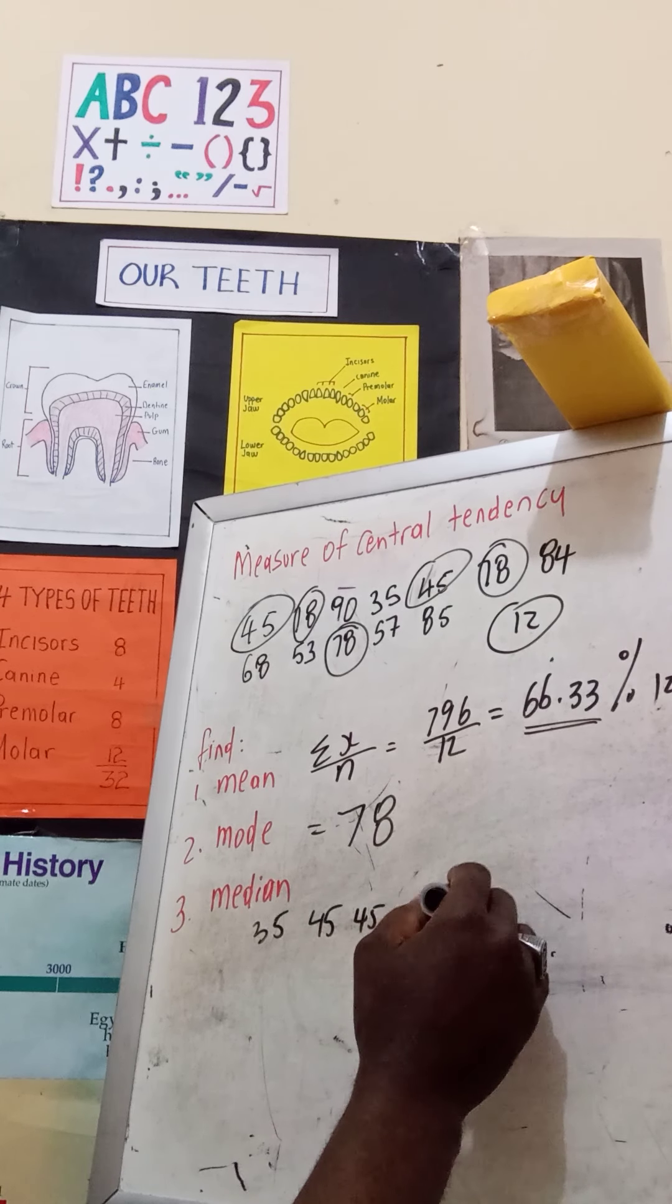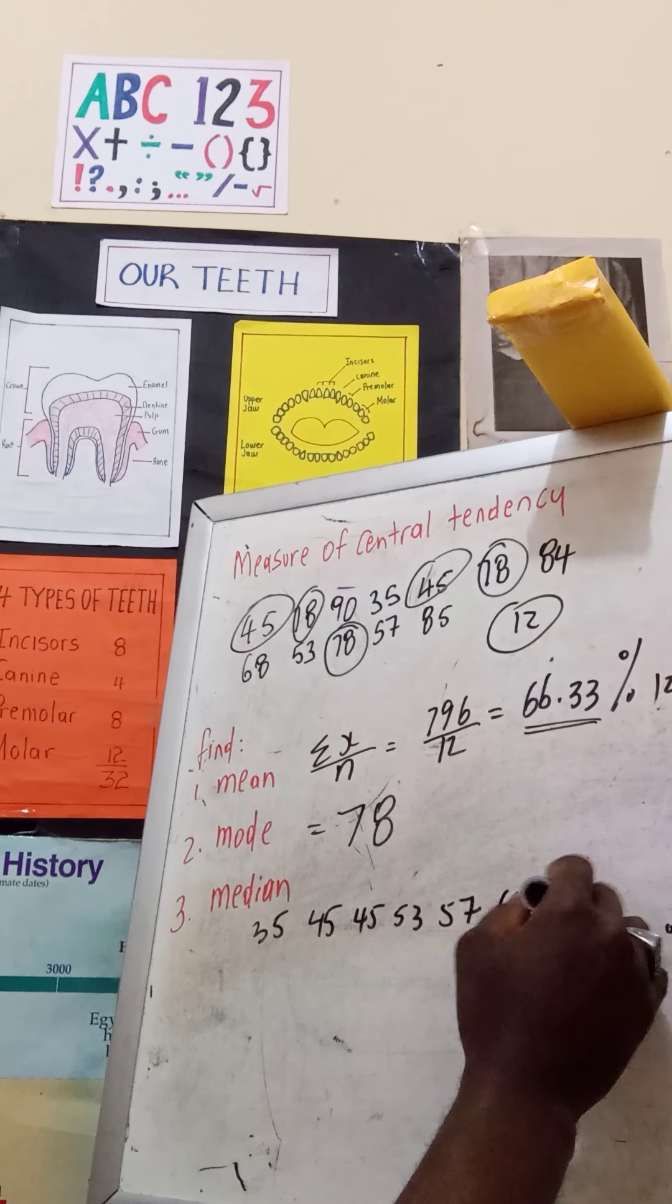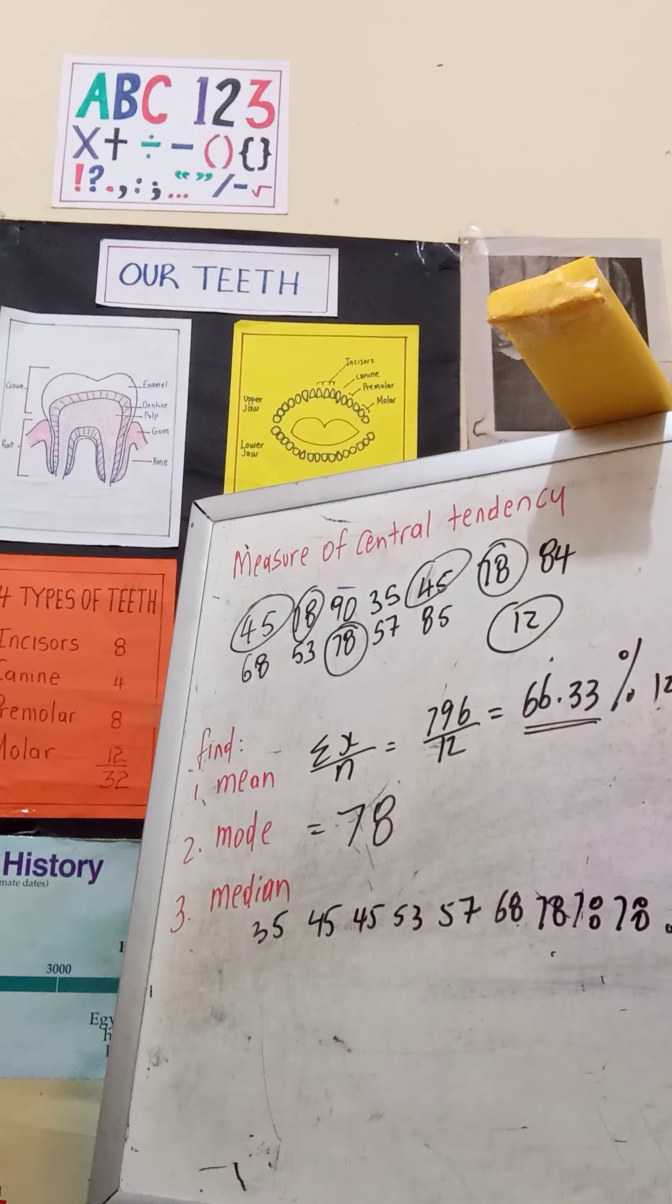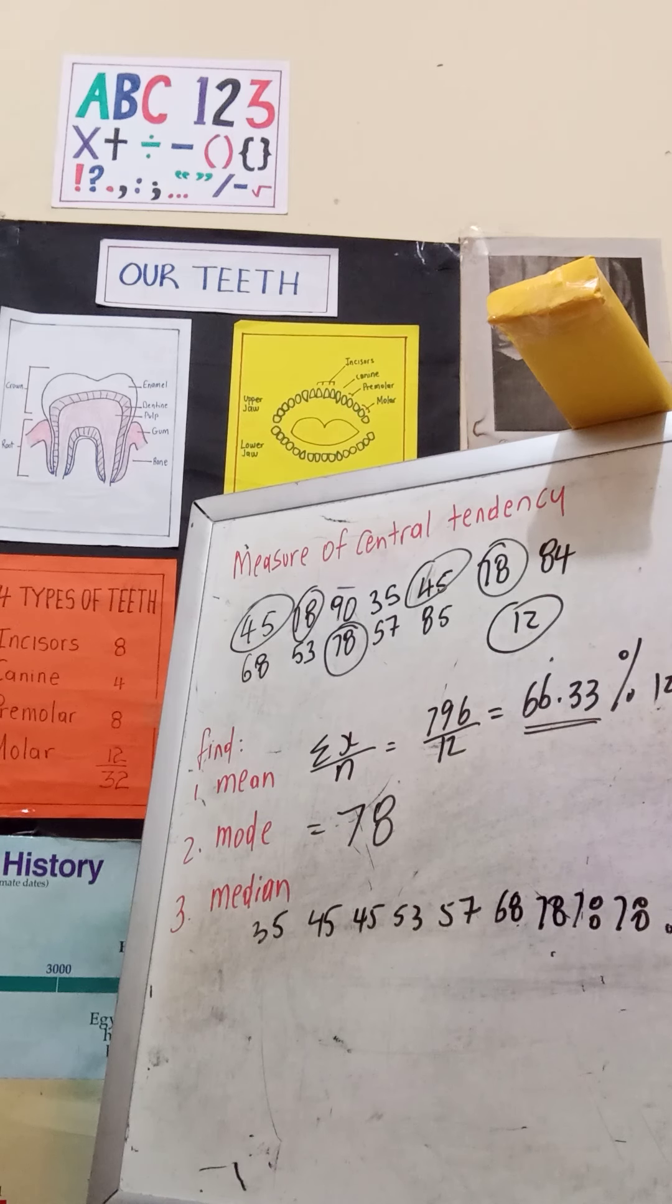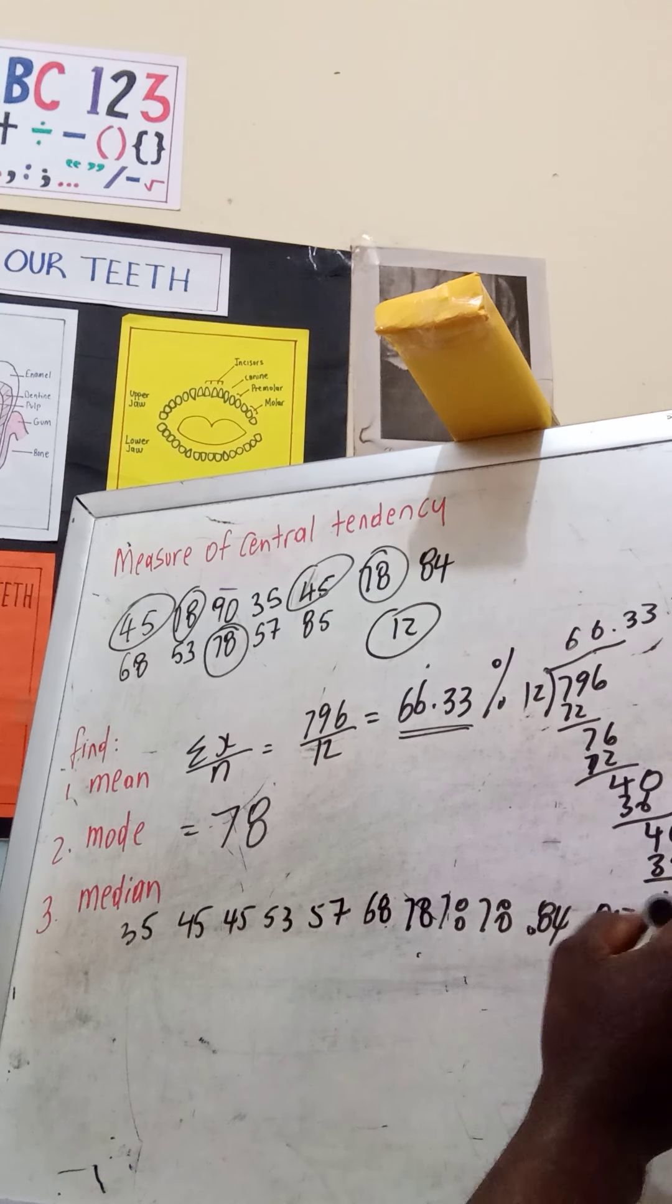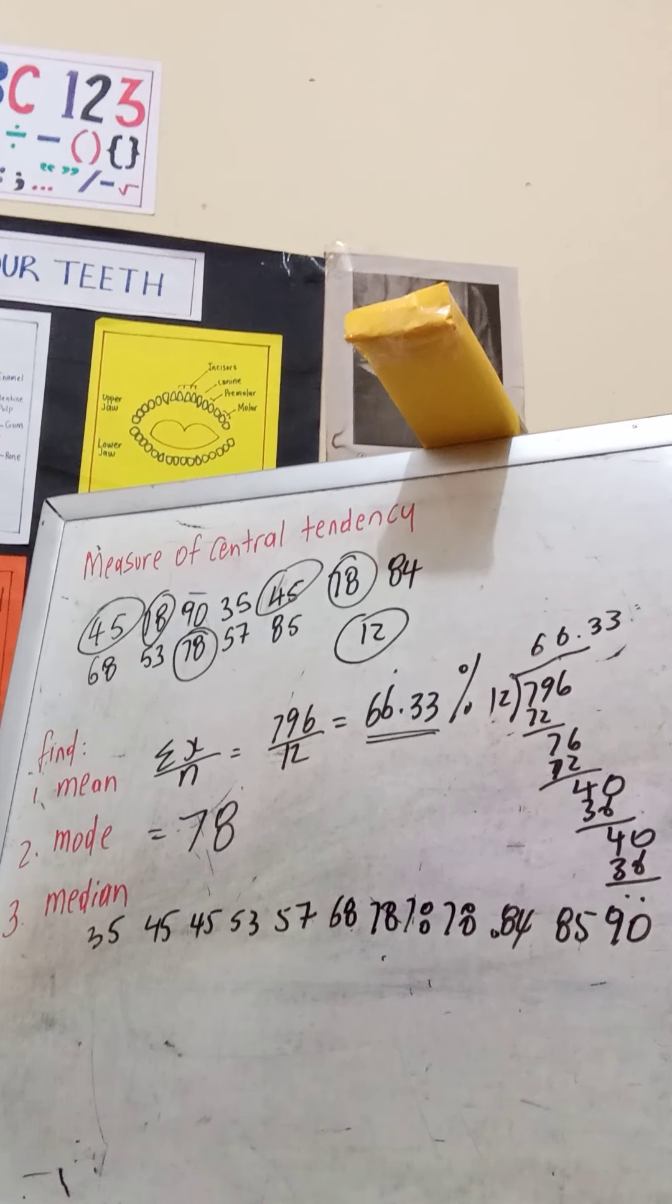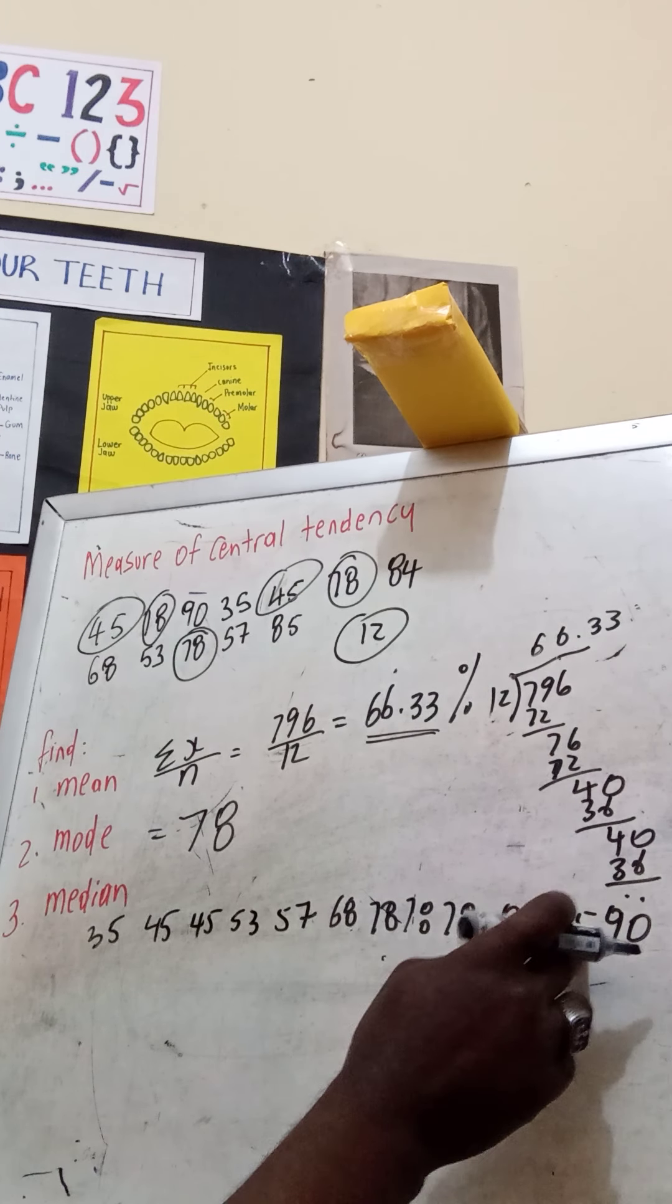I see 68, then 78 comes three times, then we have 84, and after 84 we have 85 and we have 90. Let me check to see if I'm correct: one, two, three, four, five, six, seven, eight, nine, ten, eleven, twelve. That's 12.